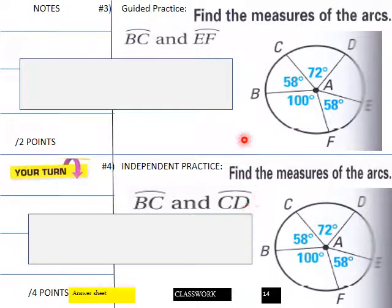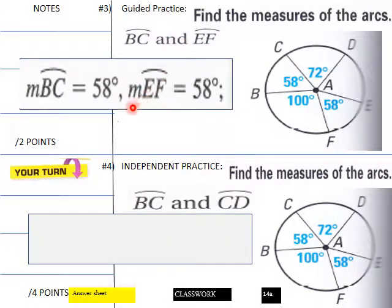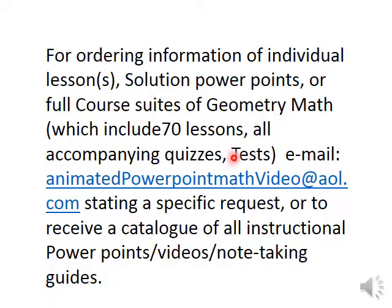Now page 14 on your classwork worksheet: find the measure of arc BC and arc EF. Arc BC has a measure of 58 degrees, and arc EF also has a measure of 58 degrees. That is your lesson for today — 11.3 Part One, Geometry math. If you need note-taking guides, PowerPoints, or other videos for this course, email me and I'll get those out to you. Thank you very much.